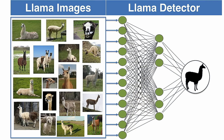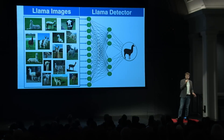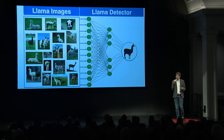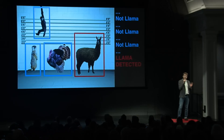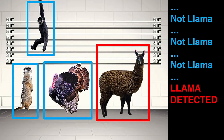Machine learning works through lots of examples. If you want a llama detector, you give it lots of pictures of llamas; it learns the shape, contour, and colors of a llama, and pretty soon it can pick a llama out of a lineup. I have no idea how it does this — I just know how to make it work.